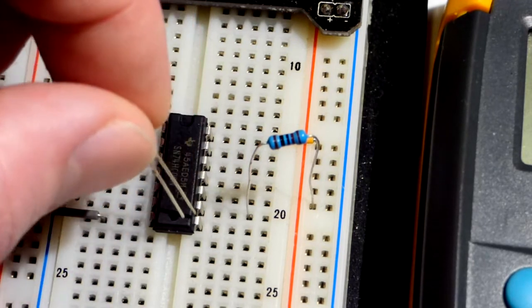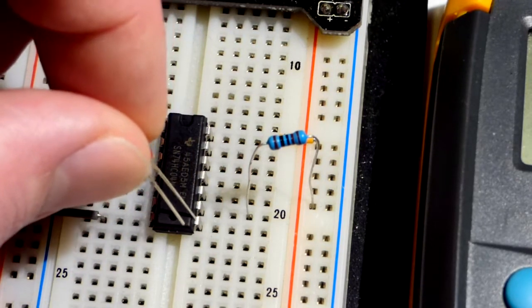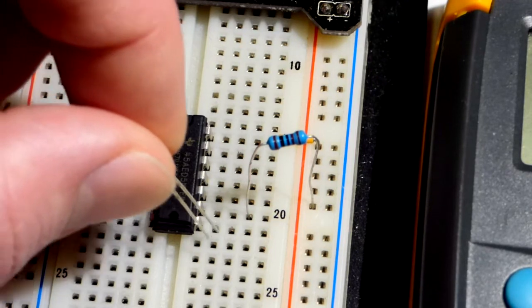What I want to do is color code what the polarity of the output is. To begin with, I'm going to use a red LED for when the output is more positive.